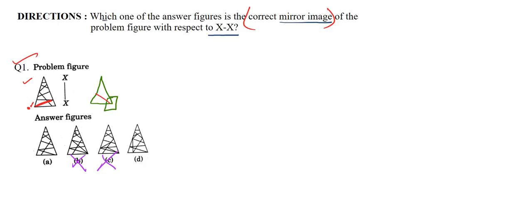Now we are left with option A and option D. In option A, you can see we have only one straight line coming out of the base of the triangle — this is the only line coming out of the base. But in option D, we have the base and two lines coming out of the base — this is one line and this is the second line. Since there are two lines in D and only one line in A, let us check the question.